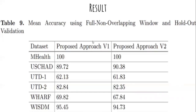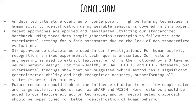The results achieved on different datasets show two proposed method versions: V1 and V2. On M-Health, they achieved 100% accuracy on both methods. On USC-HD, V1 achieved 89.72% and V2 achieved 90.38%. On UTD1, they achieved 62.13%, with further results across other datasets demonstrating performance well above state-of-the-art methodologies.